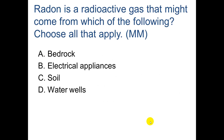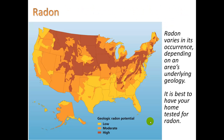Radon is a radioactive gas — which of the following might it come from? Choose all that apply. If you said bedrock, soil, and water wells, that is correct.